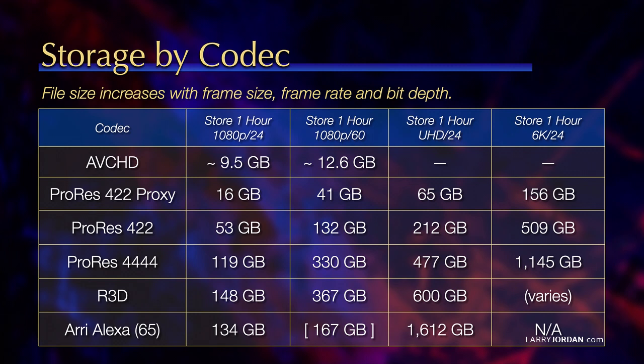To give you some numbers: to store one hour of 24fps footage, AVCHD is about 10 gigabytes, ProRes 4:2:2 is 53 gigabytes, RED is 150 gigabytes, and Arri Alexa is 134 gigabytes. Look at how file sizes increase as the frame size increases up to 6K — I haven't even updated this for 8K yet. We're talking 1.1 terabytes for ProRes 4:4:4:4 to store one hour, compared to a tenth of that at 1080p24. Holy smokes, your poor little hard disks are going to get tuckered out.